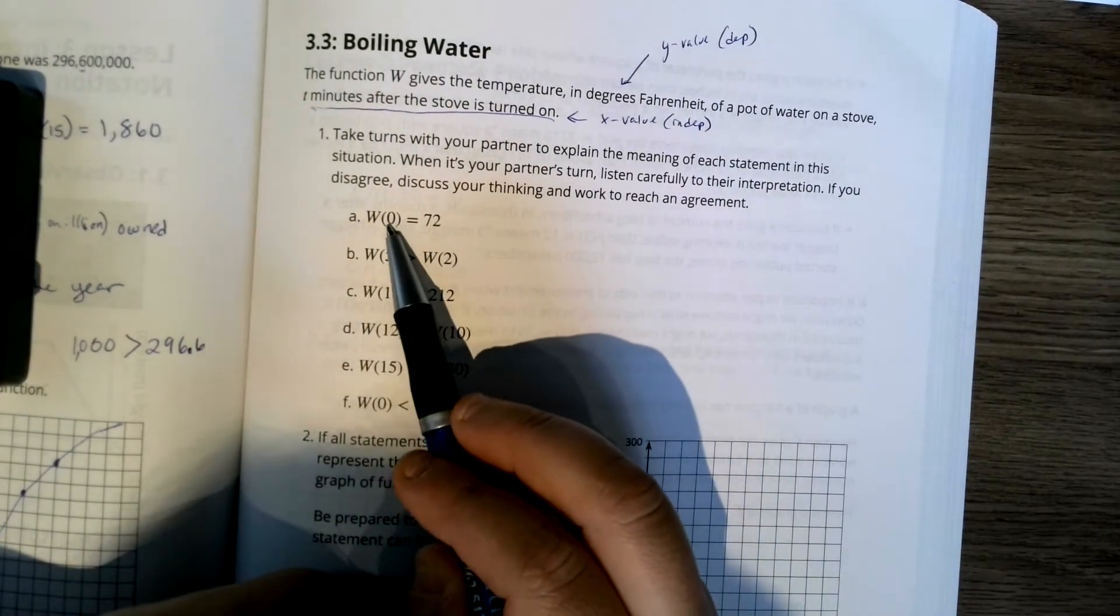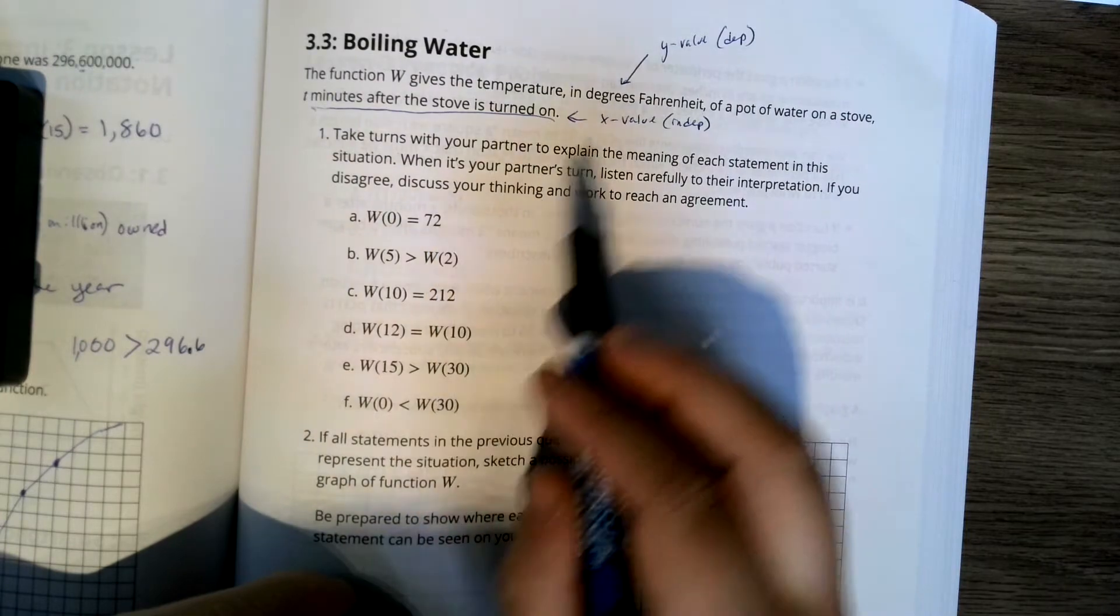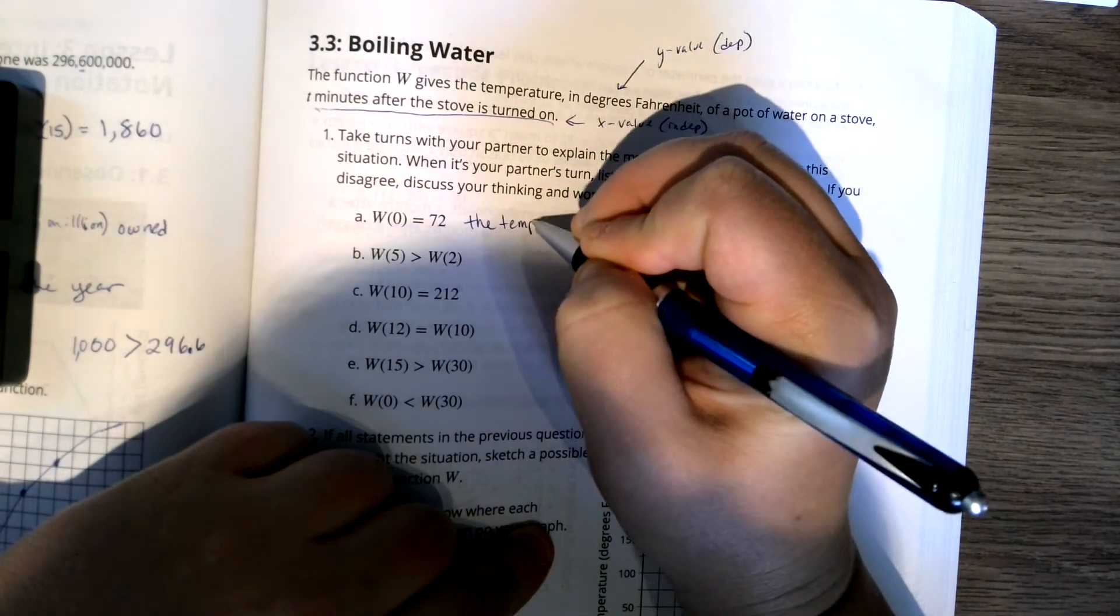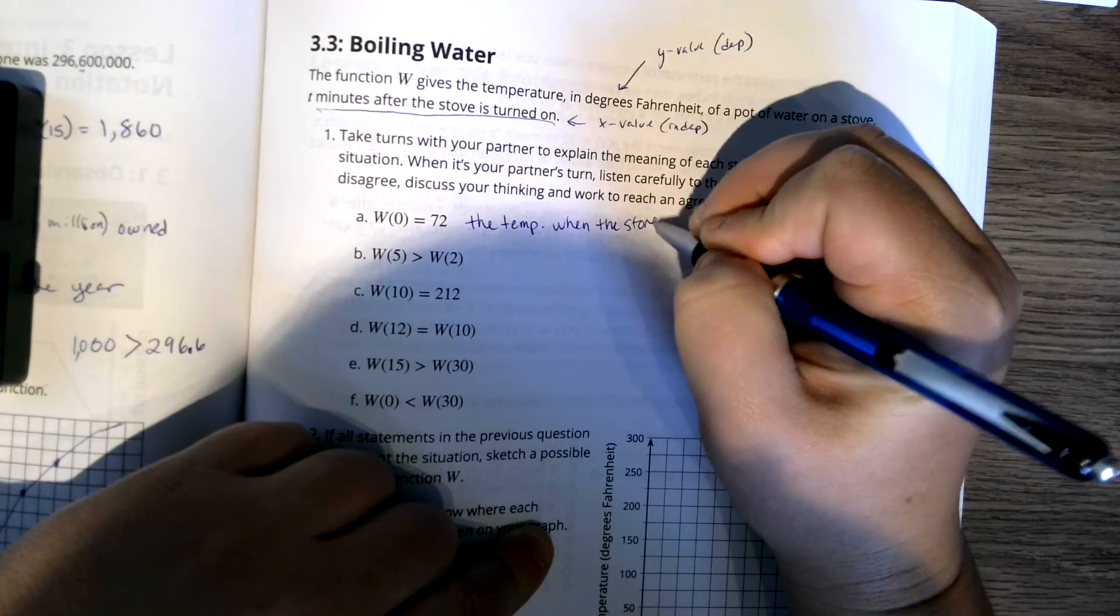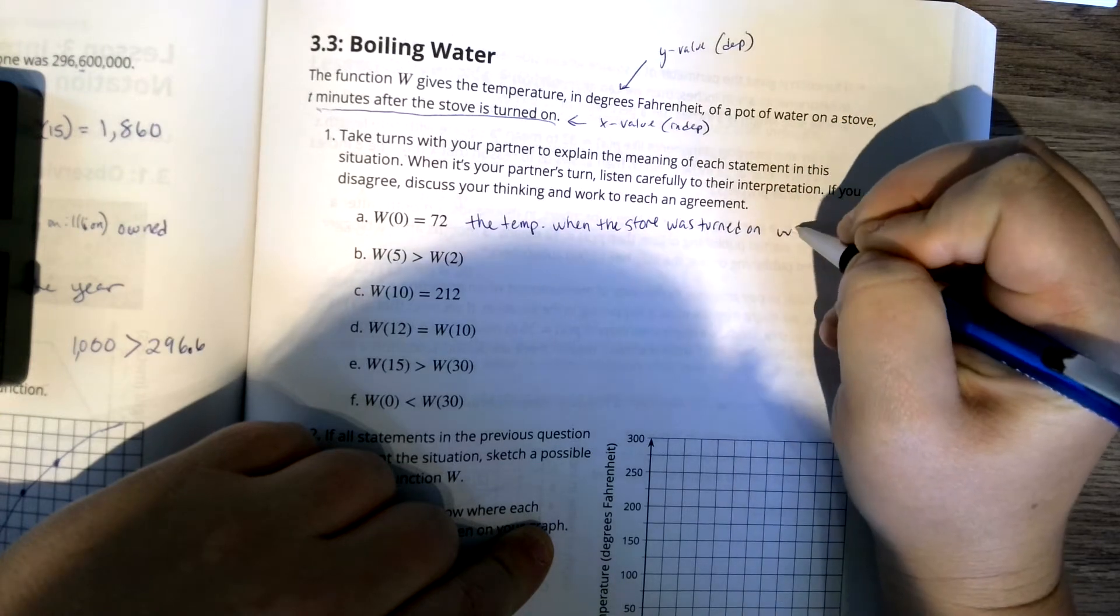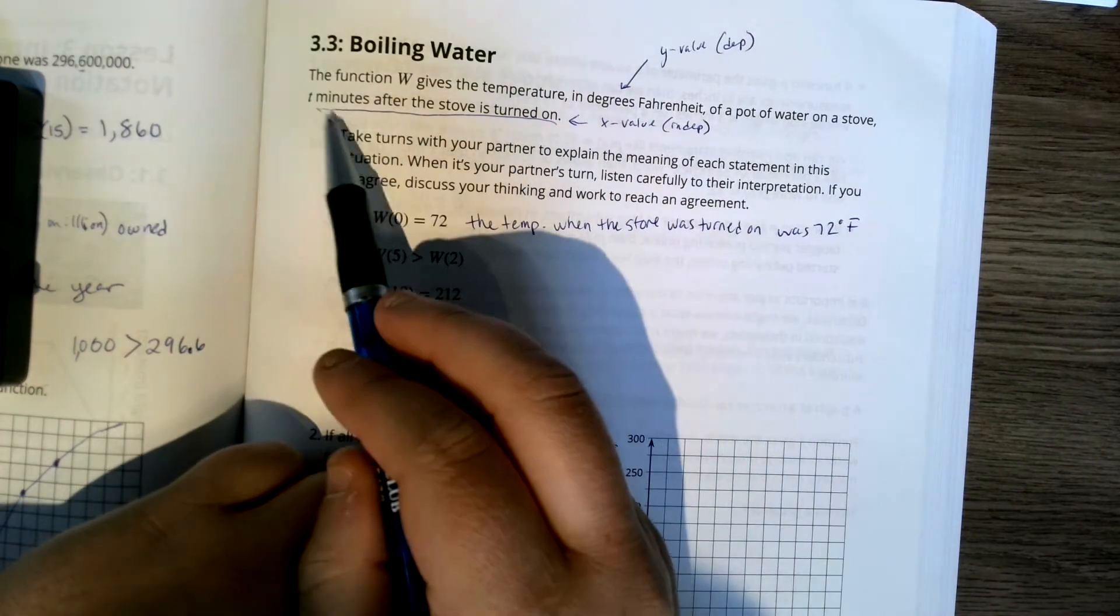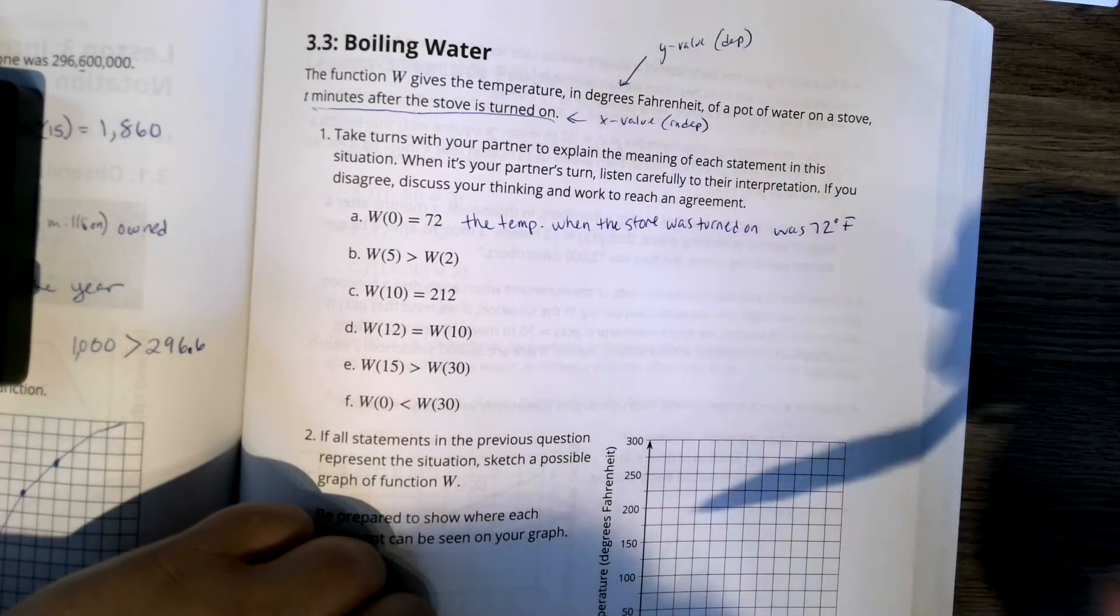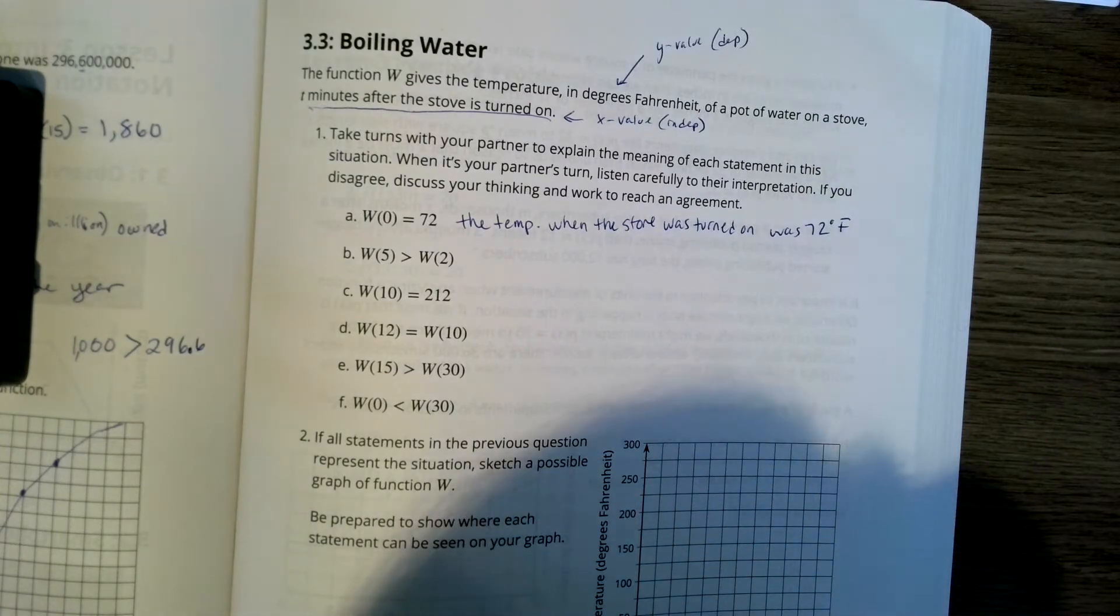So at t minutes or 0 minutes after the stove is turned on, that 72 is telling me how many degrees in Fahrenheit. So we can write the temperature when the stove was turned on was 72 degrees Fahrenheit. That 0 tells me t minutes after the stove was turned on, so pretty much 0 minutes is right when we turn it on, and the 72 is how many degrees Fahrenheit.